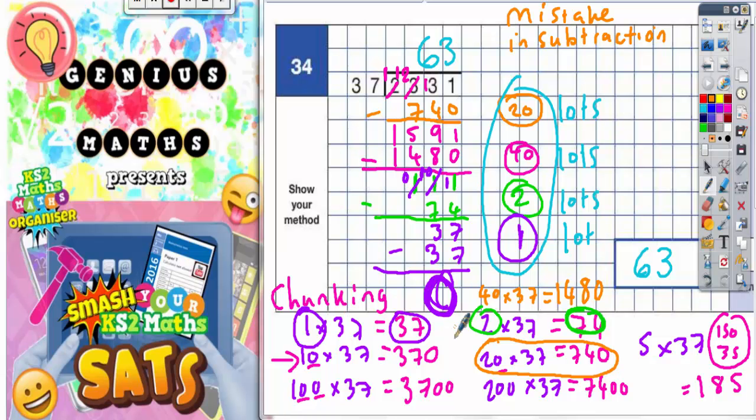However, it does not necessarily mean you made a mistake if it doesn't come down to zero. If it doesn't come down to zero, all it means is that there is a remainder. If you get a number less than 37 that's left, that number would be a remainder. You must double check that you haven't made a mistake in your subtraction.